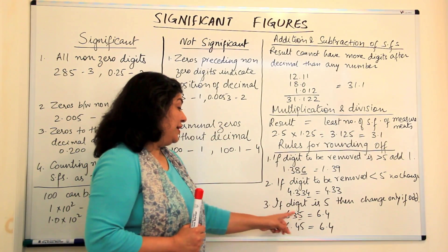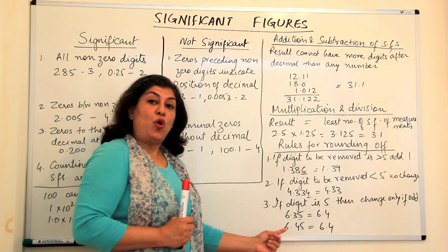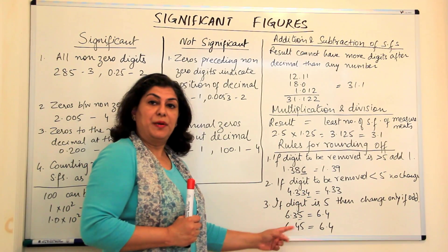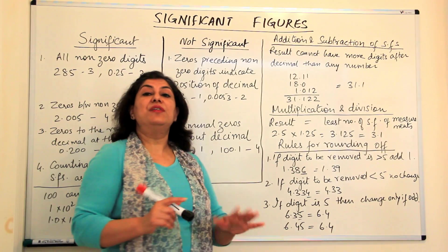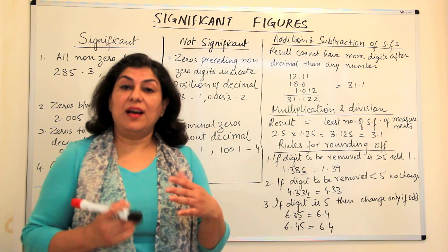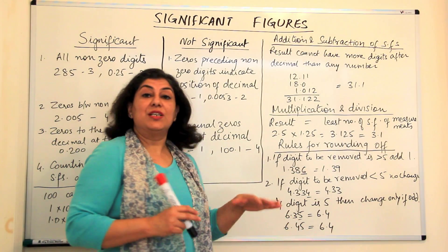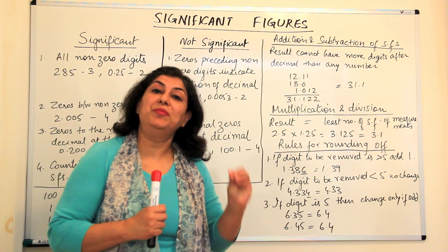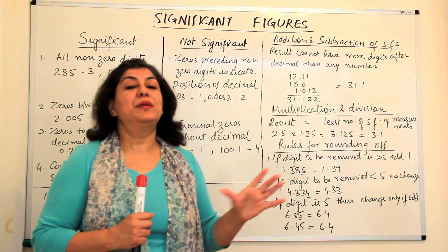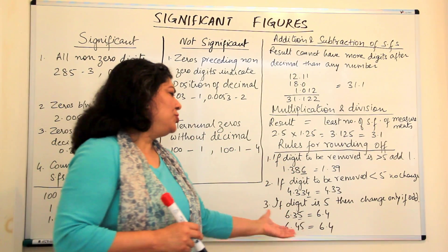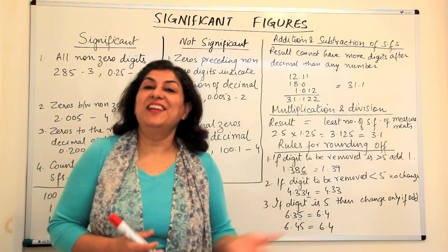then if the number before it is odd, we increase a number and make it even. But if it is even, we let it be. In other words, when the last digit is 5, we prefer to keep the answer an even number and not an odd number, because usually even numbers are easier in calculations.